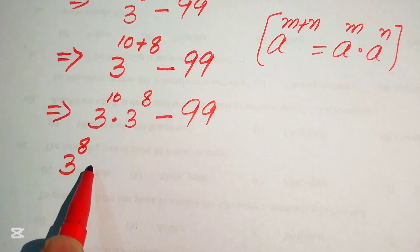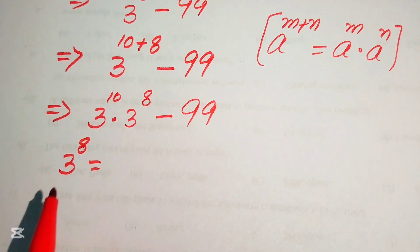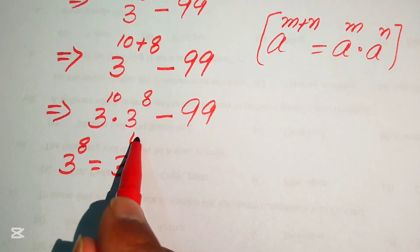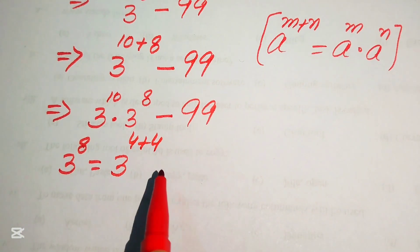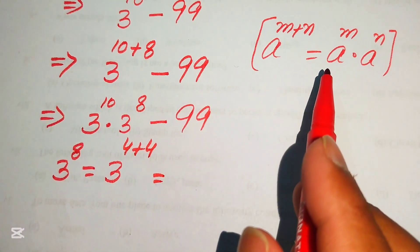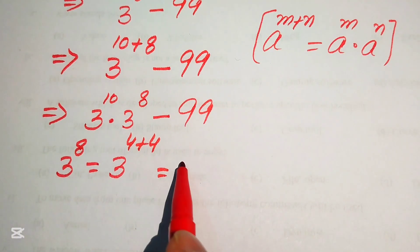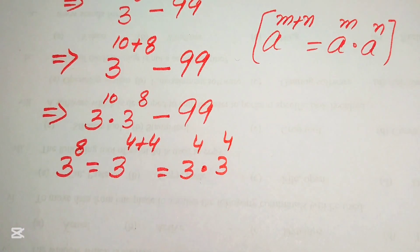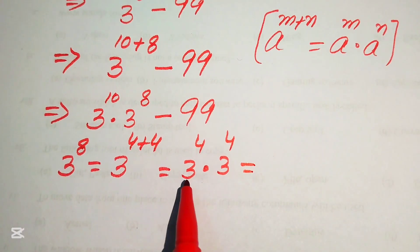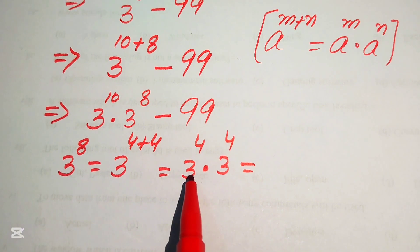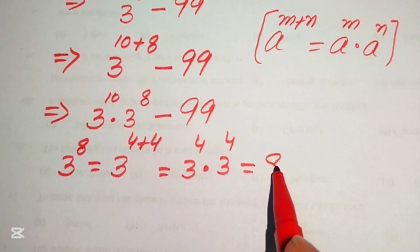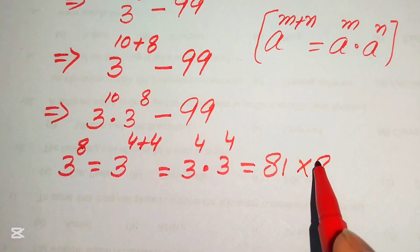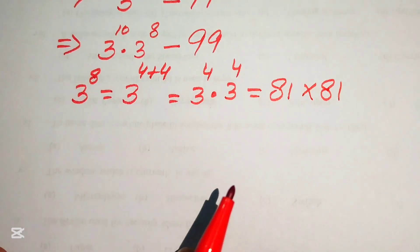We find the value of 3 to the power of 8. We write 3 to the power of 8 as 3 to the power of 4 plus 4, then apply the exponent law again, rewriting it as 3 to the power of 4 multiplied by 3 to the power of 4. We know that 3 to the power of 4 equals 81, so it becomes 81 multiplied by 81.